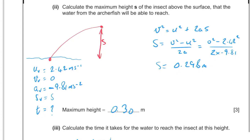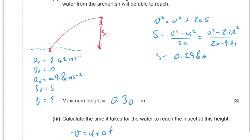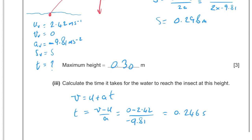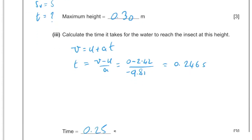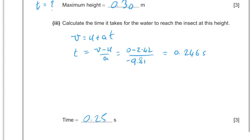To calculate the time to reach maximum height, we use v = u + at, so t = (v − u)/a = (0 − 2.42)/(−9.81) = 0.246 seconds, which rounds to 0.25 seconds to two significant figures. This is important because the time to reach the highest point equals the time for the bug to fall back down from that point, so the return journey also takes 0.25 seconds.